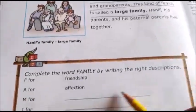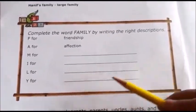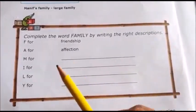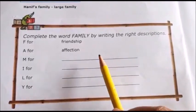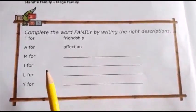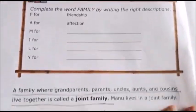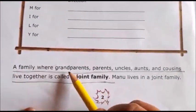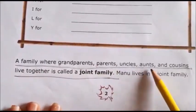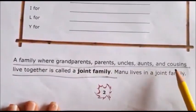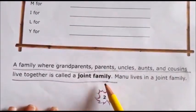Here is an exercise for you — you can complete the word 'family' by writing the description of the other given letters. Next comes joint family. A family where grandparents, parents, uncles, aunts and cousins live together is called a joint family.